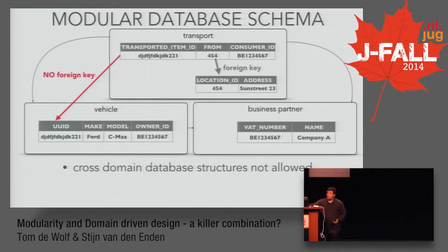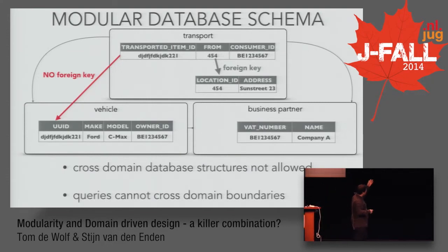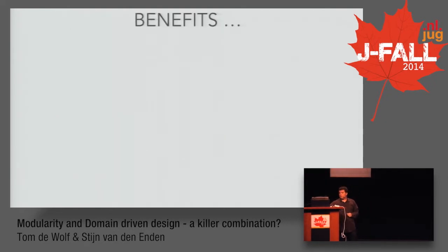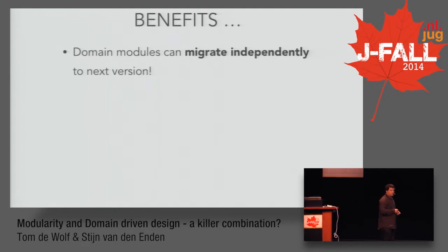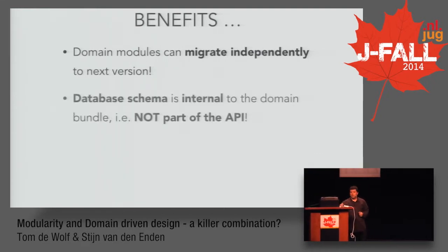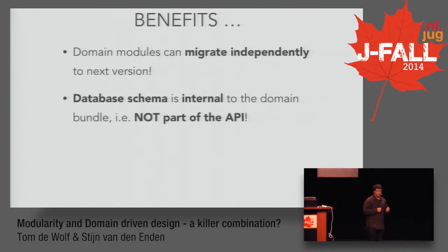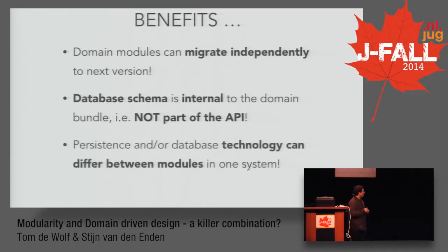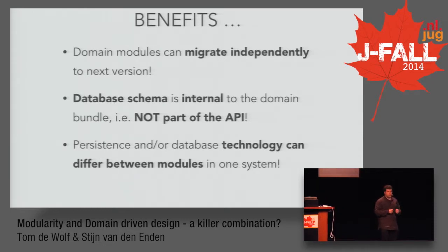The same goes for queries. If a query in the transport module uses the database structures of the vehicle or business partner domain, a change in those would imply having to change the transport queries too. The benefit of modularity here is that each domain module can be migrated and upgraded independently without knowing the internals of another. The database schema remains internal to the domain bundle — it's not part of the module's API — which gives flexibility, even to the point of using a different database technology per module.